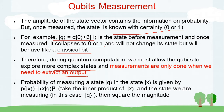Therefore, during quantum computation we must allow qubits to explore complex states in order to represent our problem, and measurements should only be done when we need to extract an output — not in between. We must be very careful that measurement is done only at the end. The probability of measuring a qubit in a given state is computed as the inner product of the state of interest with the state the qubit is in, taking the absolute value and squaring it.